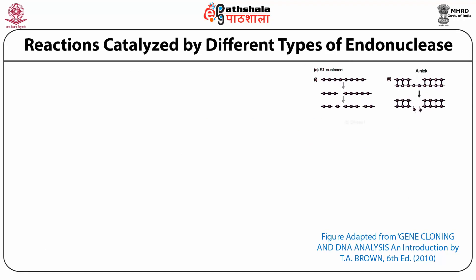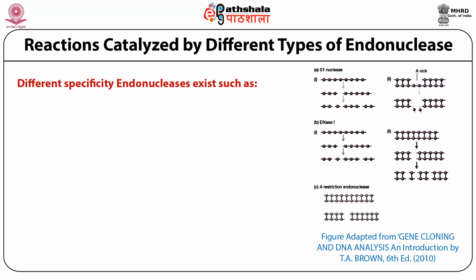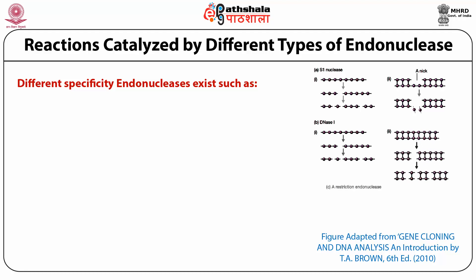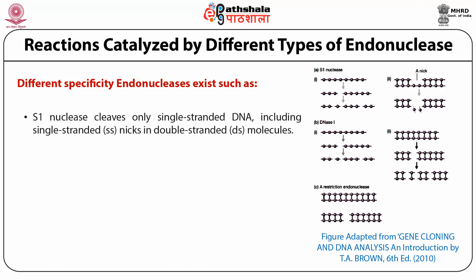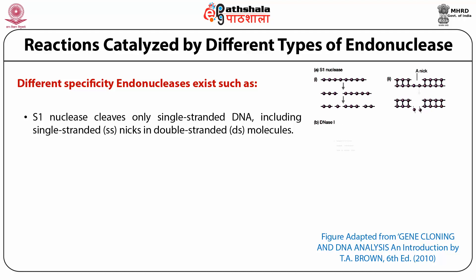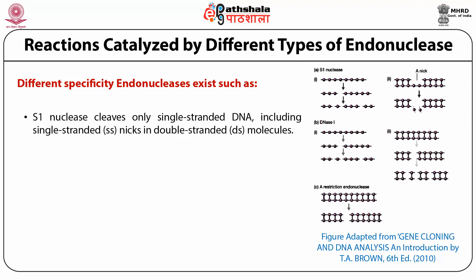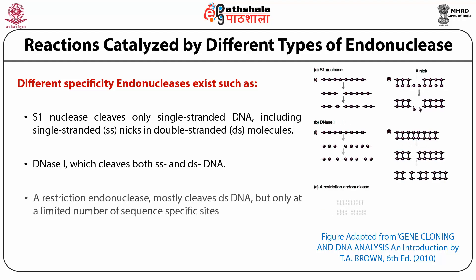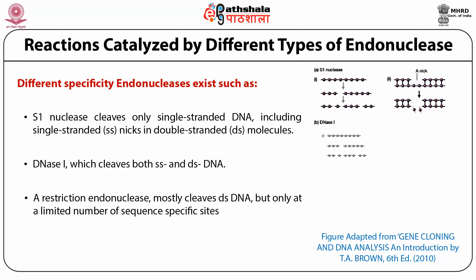Different types of endonucleases show different kinds of activity. For example, S1 Nuclease cleaves only single-stranded DNA and can also make a nick in a double-stranded DNA molecule. DNase I cleaves both single-stranded and double-stranded DNA as shown in the cartoon. Then there is a category referred to as restriction endonucleases, which mostly cleave double-stranded DNA but only at a limited number of sequence-specific sites.